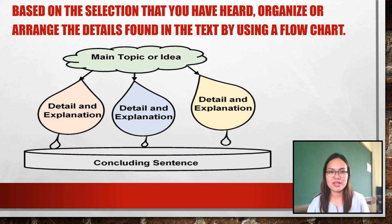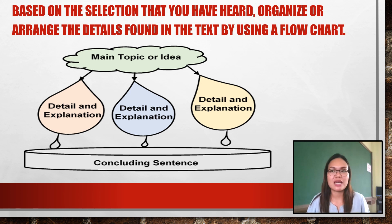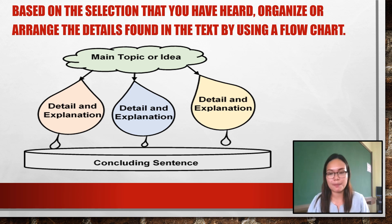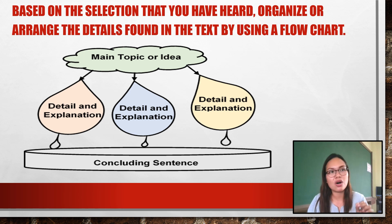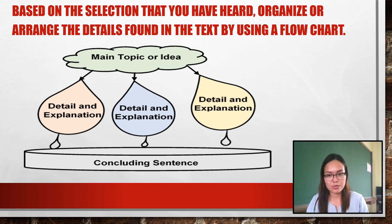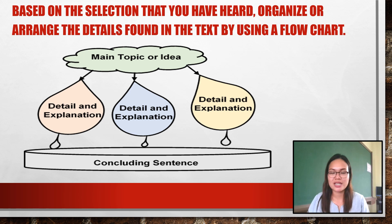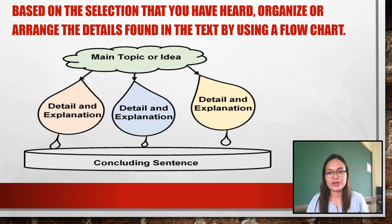For the second activity, you are to fill in information using a flowchart, again using the same audio recording entitled 'On Saving.' Organize or arrange the details found in the text using the flowchart — it starts with the main topic or main idea, the three boxes should contain the details or explanations mentioned in the audio recording, and the last part is the concluding sentence. All information can be found in the audio recording, which you can download and listen to repeatedly to answer correctly. If you have questions, feel free to message me so I can assist you.